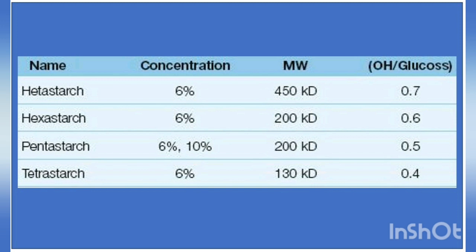The performance of 6% HES solutions as plasma volume expanders is very similar to 5% albumin. The oncotic pressure is higher than 5% albumin and the incremental plasma volume can be higher as well. The effect on plasma volume can last up to 24 hours with high molecular weight preparations such as hetastarch, while the duration of action of lower molecular weight preparations is at least 6 hours, though the effect begins to dissipate within 1 hour.